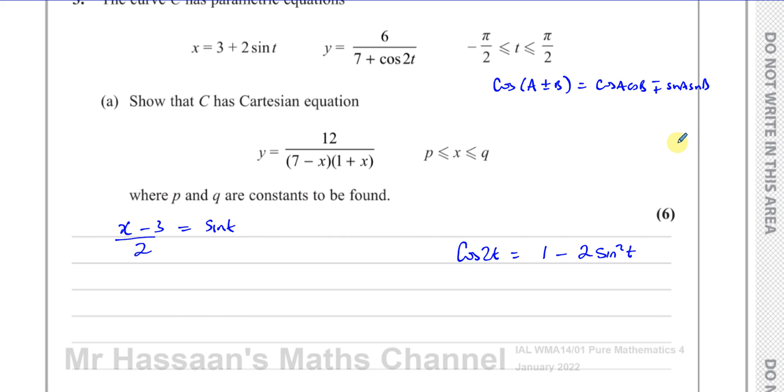So this is something which is given in the formula book. And if you think about it, this is like a double angle. So cosine 2A would be like cosine of A plus A. So if we follow this, it will be cosine A times cosine A, which is cosine squared A, minus sine A times sine A, which is sine squared A. And you end up with this.